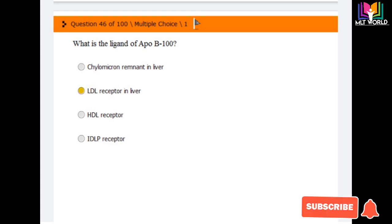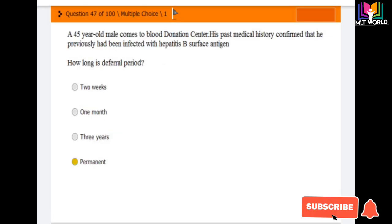Question number 46: What is the ligand of Apo B100? Options are chylomicron remnant in liver, LDL receptor in liver, HDL receptor, VLDL receptor. The answer is second option, LDL receptor in the liver is the ligand of Apo B100. Question number 47: A 45-year-old male comes to blood donation center. His past medical history confirmed that previously he had been infected with hepatitis B surface antigen.